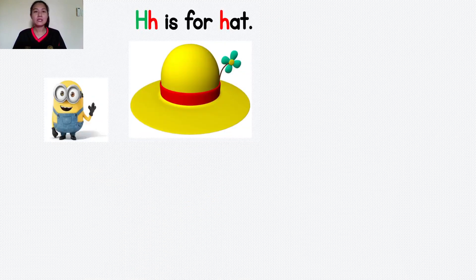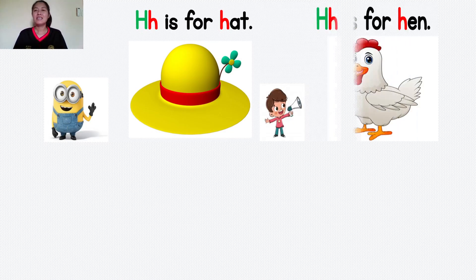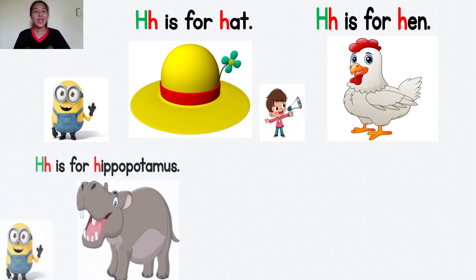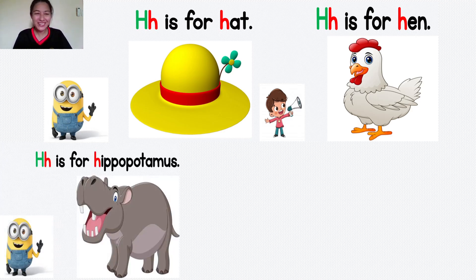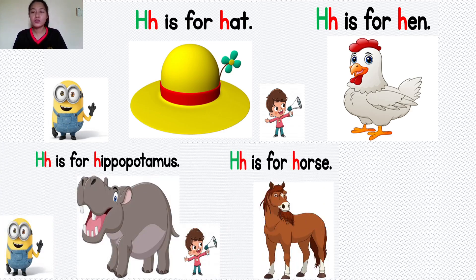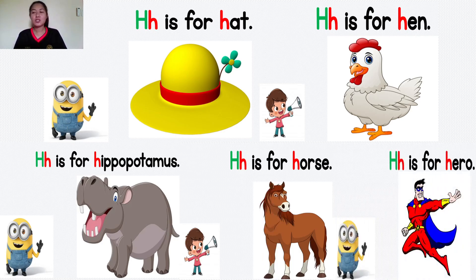And let's move to the letter H. The letter H is for hat. Hat. The letter H is for hen. Hen. Very good. The letter H is for hippopotamus. Hippopotamus. And the letter H is for horse. Horse. The letter H is for hero. Hero. Very good.